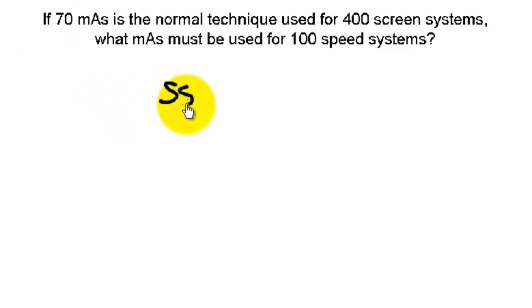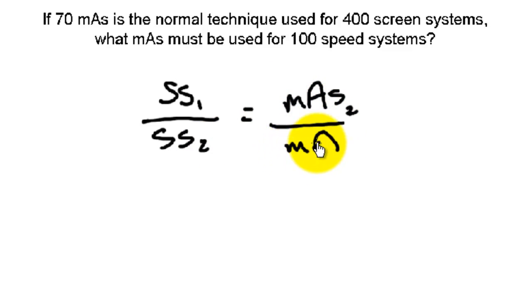So let's look at our formula: screen speed 1 over screen speed 2 equals mAs 2 over mAs 1. Screen speed 1, we have 400 over screen speed 2, 100.